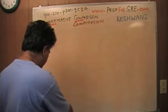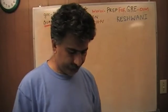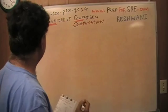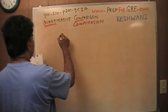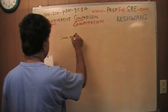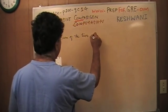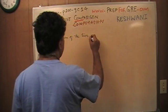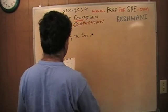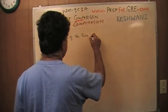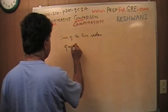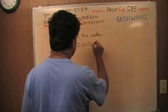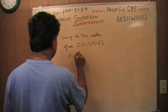They are altogether 15 only. Let's see what the problem has to say. It says the sum of the length of the two sides of an isosceles triangle is 7.